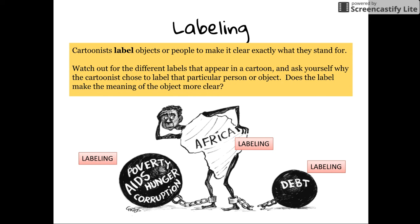Now we're going to walk you through some different examples of the skills Mrs. Berg just mentioned. The first one is labeling — where the cartoonist physically writes text on the cartoon itself to help the reader understand what a shape or image is supposed to represent. In this case, the cartoonist labeled the person in the shape of Africa with the word 'Africa,' making it very clear. They also attached two balls and chains to the person of Africa and labeled them with words such as hunger, AIDS, debt, and corruption, making it clear what is holding back or chaining down the continent of Africa.